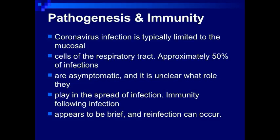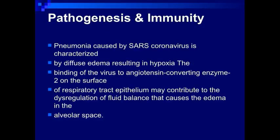The coronavirus infection is typically limited to the mucosal cells of the respiratory tract. Approximately 50% of infections are asymptomatic, and it is unclear what role they play in the spread of infection. Immunity following infection appears to be brief and re-infection can occur. Pneumonia caused by SARS coronavirus is characterized by diffuse edema resulting in hypoxia. The binding of the virus to angiotensin-converting enzyme 2 on the surface of the respiratory tract epithelium may contribute to dysregulation of fluid balance that causes edema in the alveolar space.